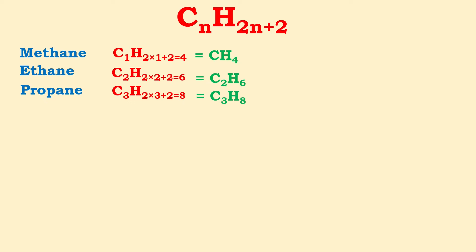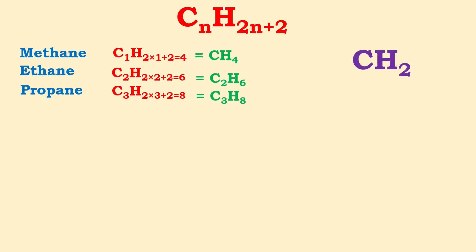Have you noticed that as we go down the series, each successive compound differs from the preceding one by a CH₂ group? Comparing methane with ethane: methane has one carbon and four hydrogen atoms, ethane has two carbons and six hydrogens — differing by CH₂. Ethane and propane also differ by CH₂. That's why each preceding compound differs by CH₂. So if propane is C₃H₈, then butane is C₄H₁₀. We can remember easily: however many carbon atoms are present, the hydrogens will be double plus two.